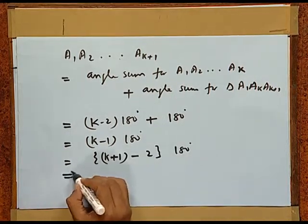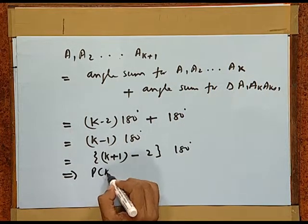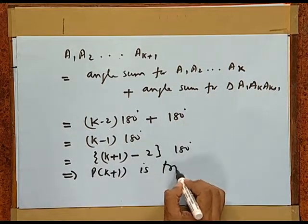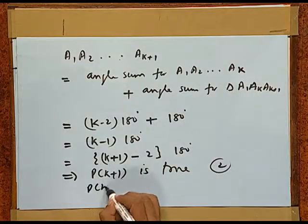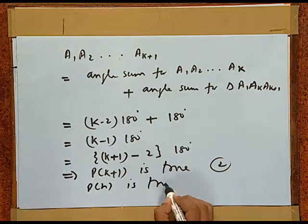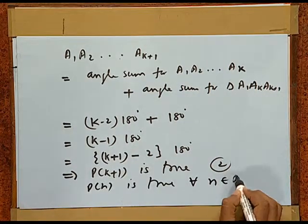This implies P(k+1) is true. Thus, both steps of induction are complete. So, we can claim that P(n) is true for all n belonging to the natural numbers, which means for any polygon we can establish a well-defined formula for the angle sum.